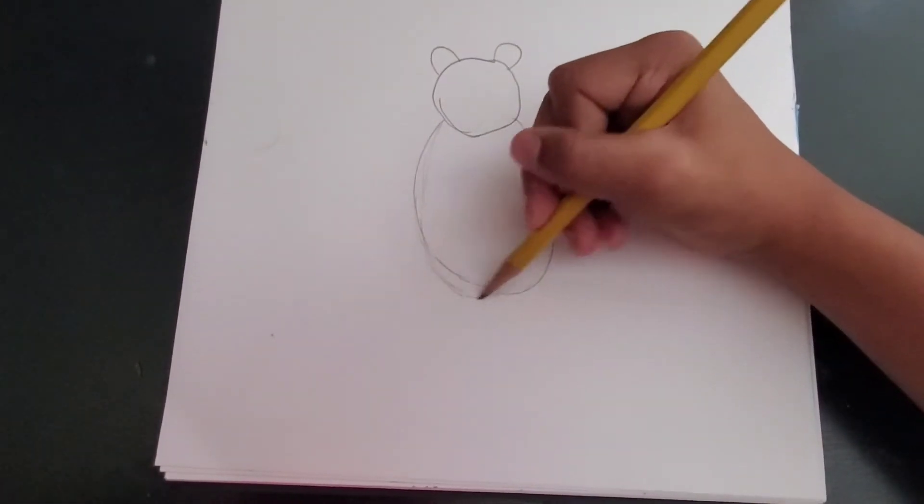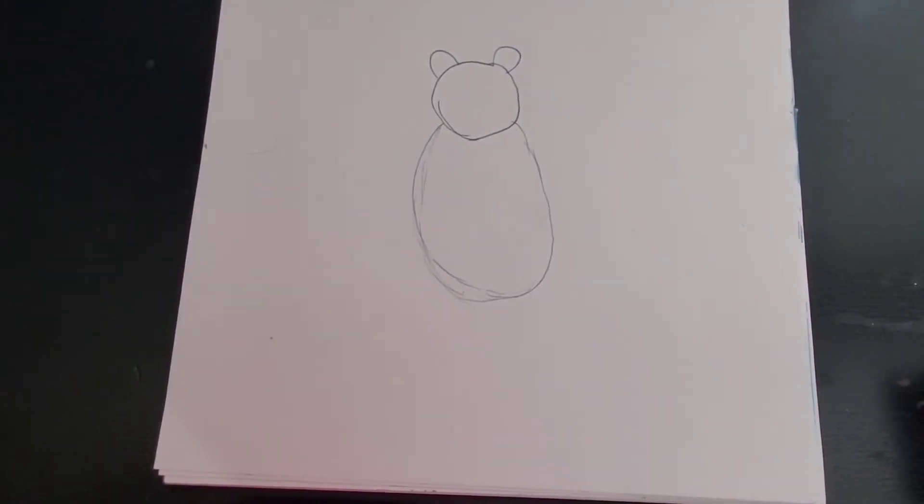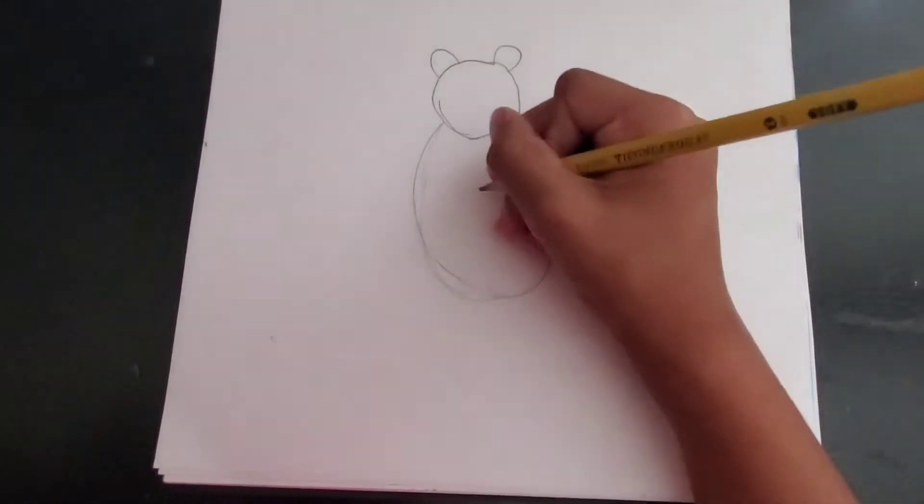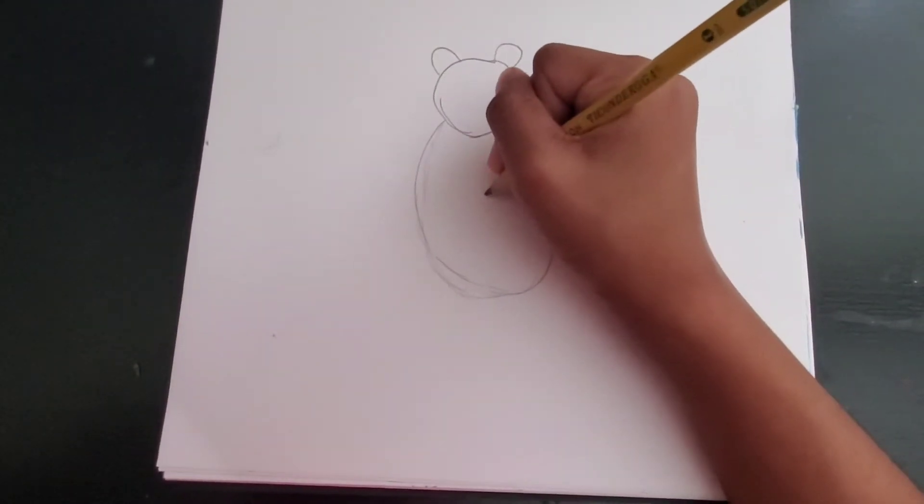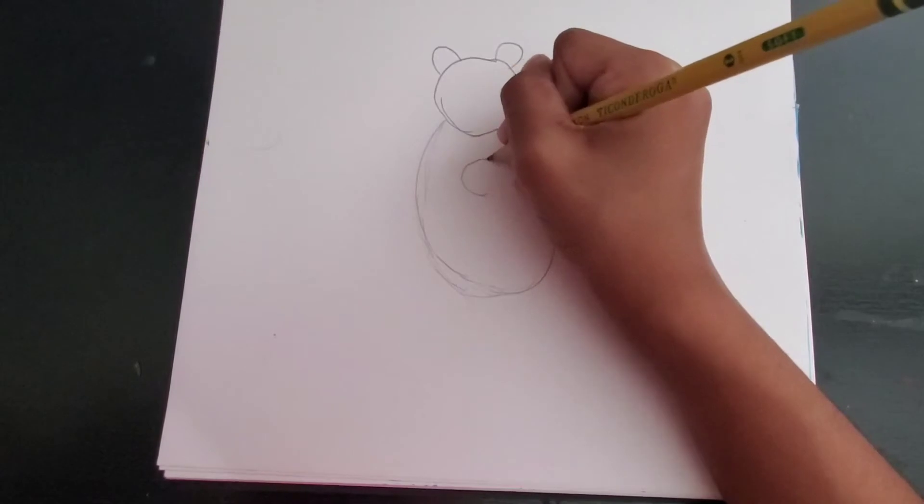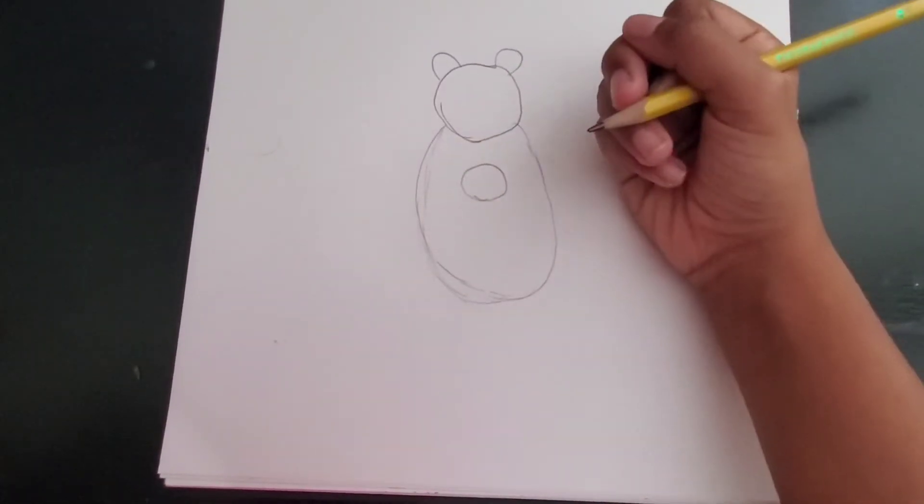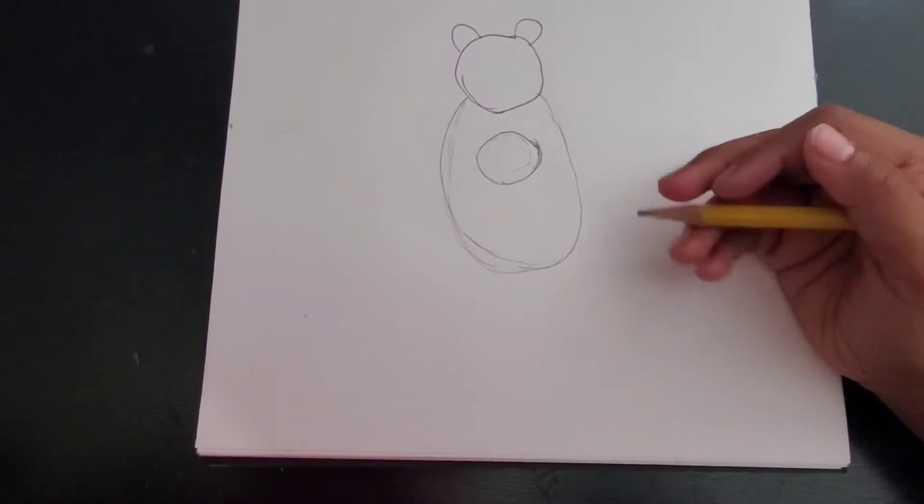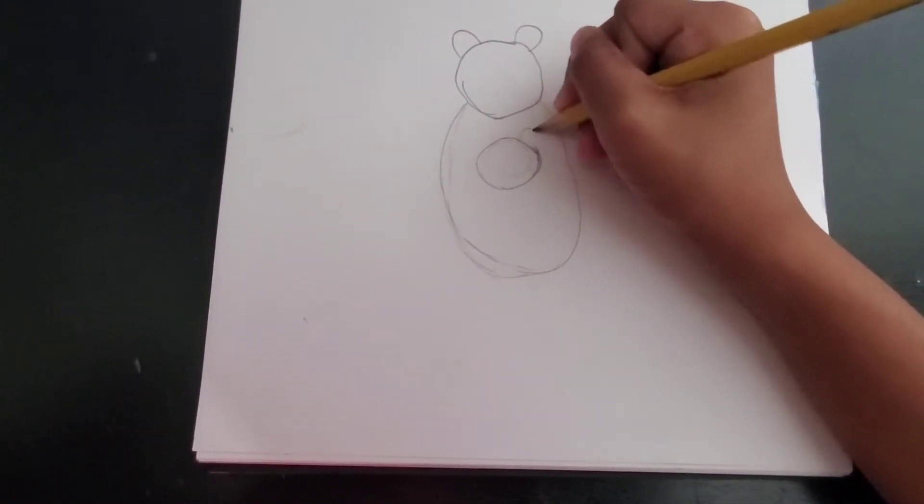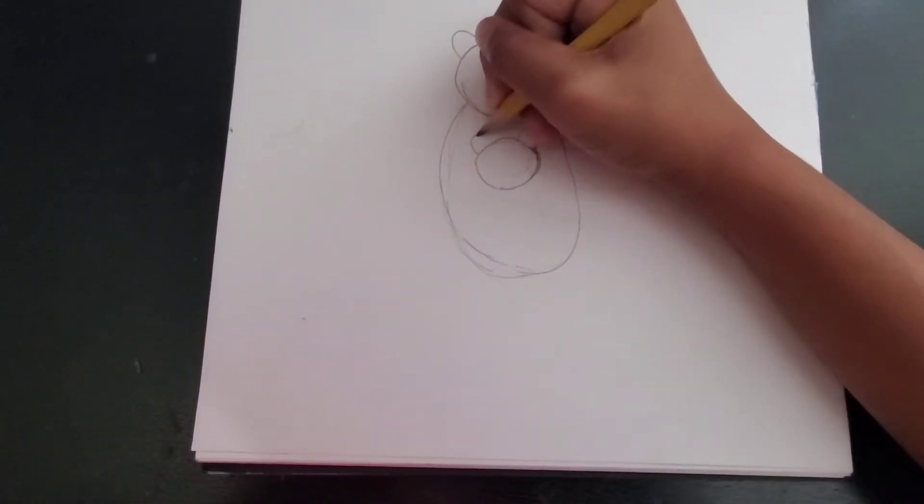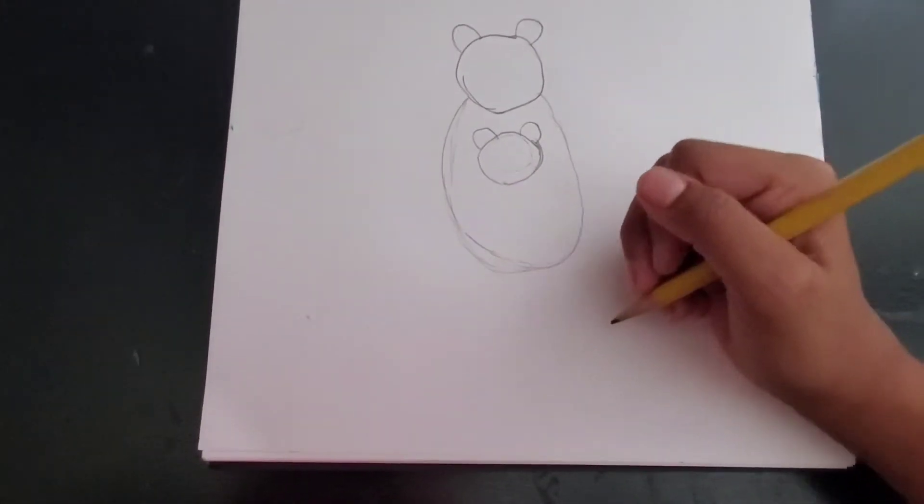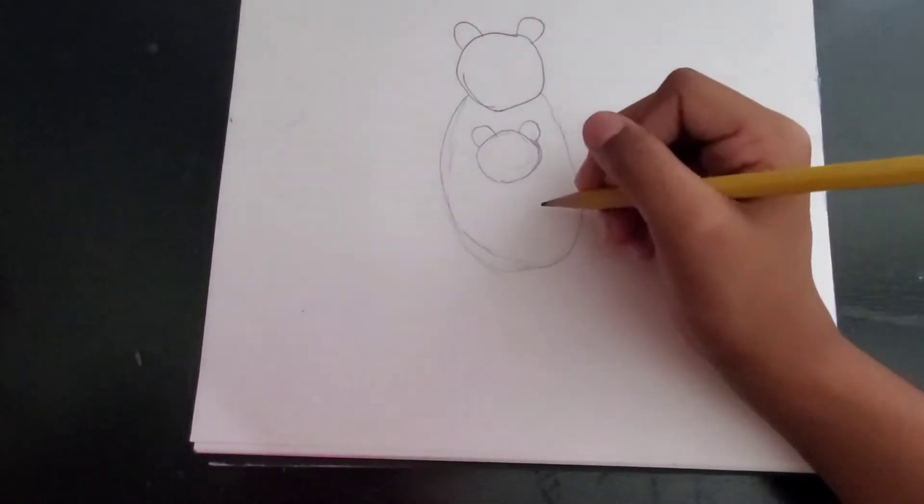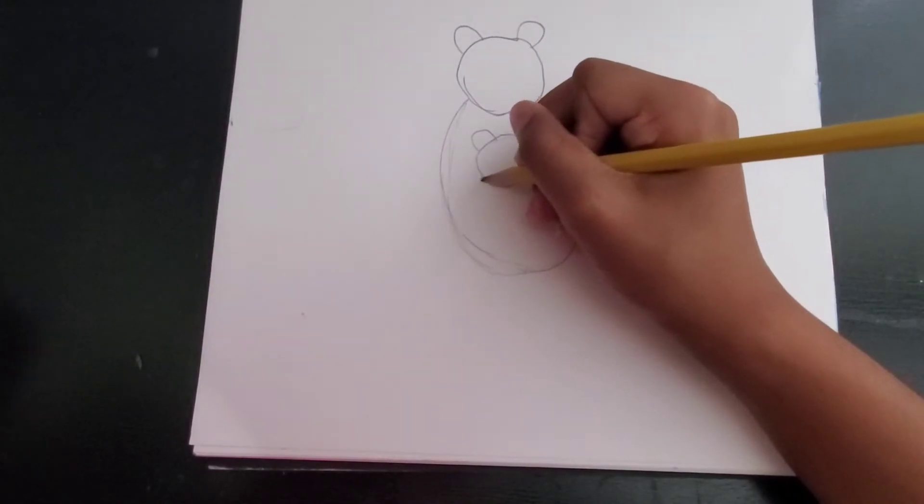So next we will draw the baby bear's face and his body. So the baby bear's face goes right down. And his face is supposed to be smaller than the mama's face. So we draw a circle. And then the ears of the baby. And his body also goes in the oval and his oval will end right where the mama's body ends.